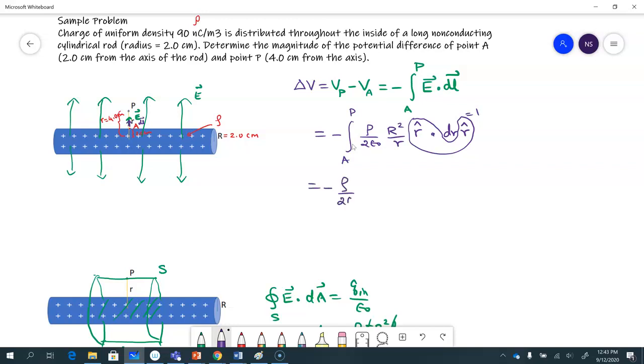And so if I simplify it further, negative rho over 2 epsilon naught, R squared is a constant as well. I have integral dr over r, which is natural log of r. And if I have to substitute, this is radius at point A, and this is radius at point P. Radius at point A is 2 centimeters, or 0.02 meters. At point P, it's 0.04 meters.